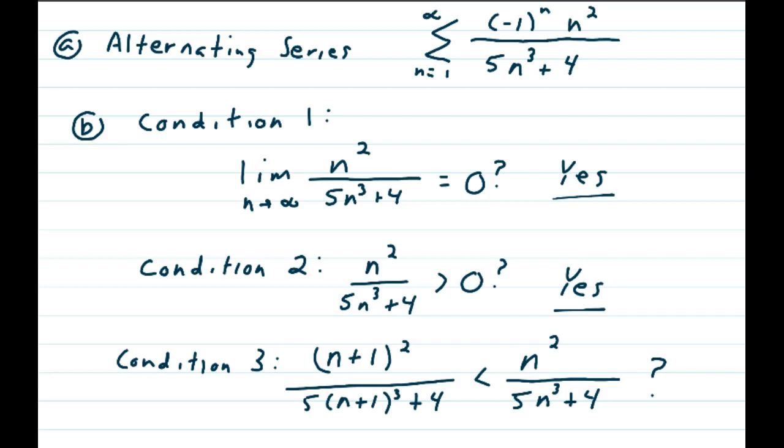Condition 2 is, is n squared over 5n cubed plus 4 greater than 0? And that's a yes, because our series starts off at 1. So those two are relatively easy to test.